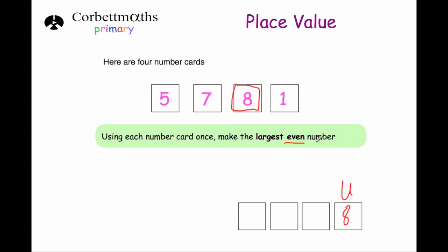We want to make the largest possible number, so we're going to put the largest remaining number into the thousands column. We can't put the 8, so we'll put the 7 in there. We'll put the 5 into the hundreds and the 1 into the tens. That gives us the answer 7,518. And that's our answer.